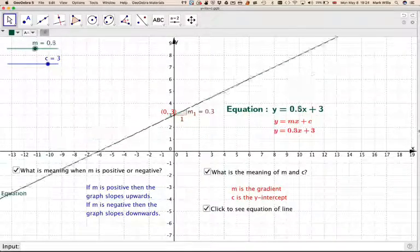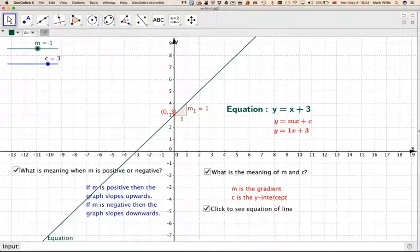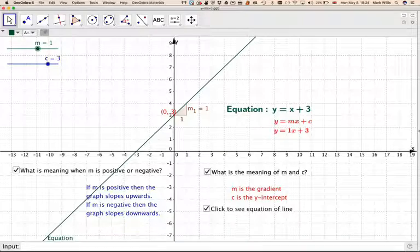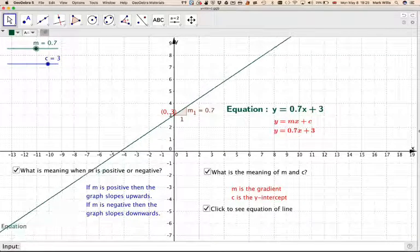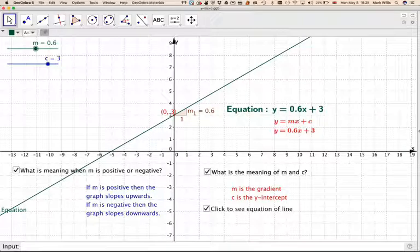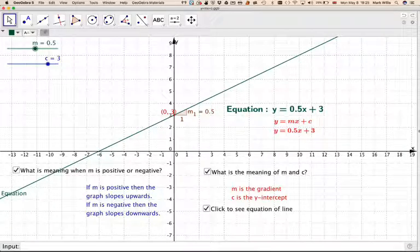If we go around this way, we have the sloping upwards. We have a positive gradient. We can also have fractions of gradients as well. Let's take that one. This is y is equal to 0.5x plus 3. We could write that as 1 half of x. So every 1 along, we go up a half. That's what a gradient of 1 half means.